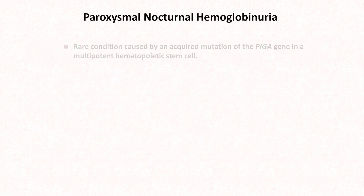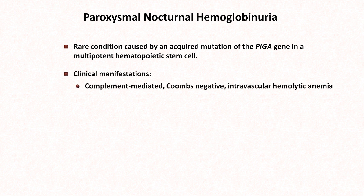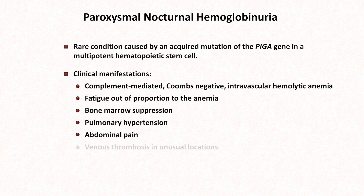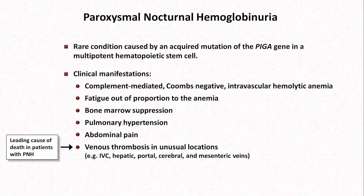Paroxysmal nocturnal hemoglobinuria is a rare condition caused by an acquired mutation within a multipotent hematopoietic stem cell. The clinical manifestations of PNH include a complement-mediated Coombs-negative intravascular hemolytic anemia, fatigue out of proportion to the anemia, bone marrow suppression, pulmonary hypertension, abdominal pain, and relevant for this video, venous thrombosis in unusual locations such as the IVC, hepatic and portal veins, the dural venous sinuses of the brain, and the mesentery. It's the venous thrombosis that's the leading cause of death in patients with PNH. Despite its name, the classic presentation of paroxysms of hemolysis occurring at night is actually atypical for the disease. Diagnosis is confirmed via flow cytometry.